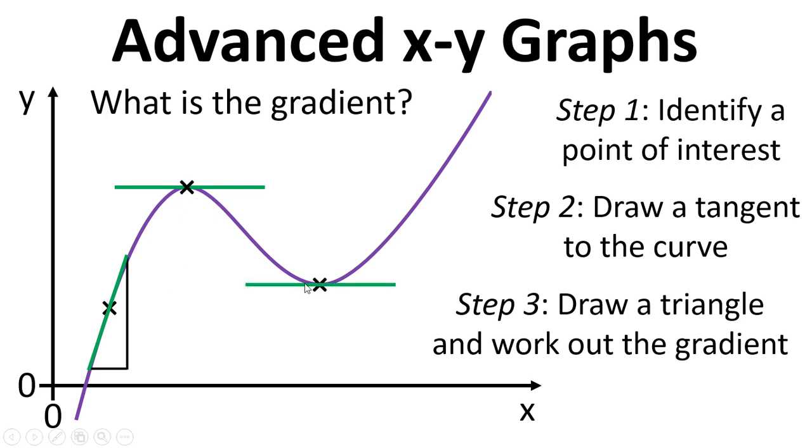So here are two points where the gradient is zero, also referred to as stationary points. Here's a point at which the gradient is negative, and another one where the gradient is positive.